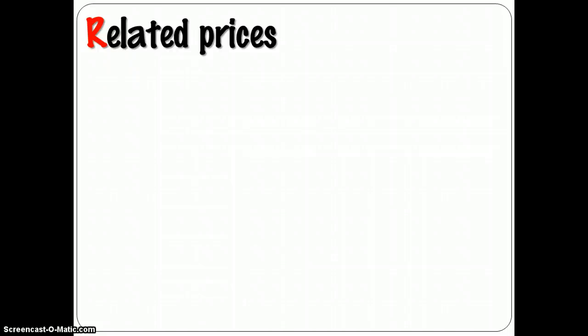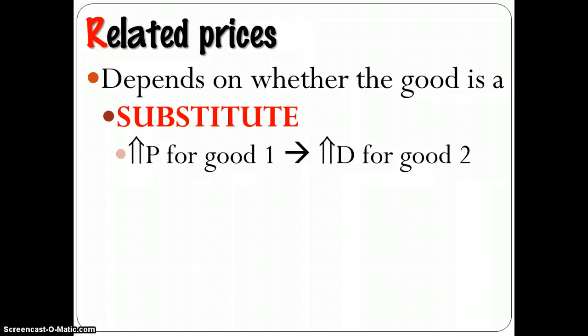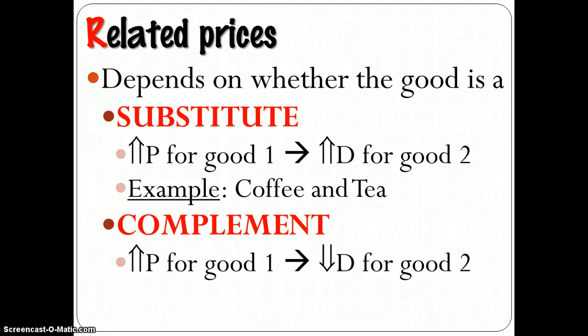The price of related goods is also something that comes into play. The effect of related prices on demand depends on whether the good is either known as a substitute or a complement. And in the case of a substitute, what we're talking about is that if the price of one good goes up, then the demand for another good, the substitute, would go up. So if the price of coffee goes up, then I'm going to shift my demand to tea. So if coffee is more expensive, then I'm going to want more tea. That's a substitute.